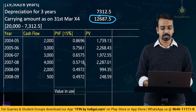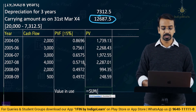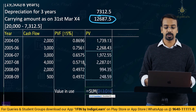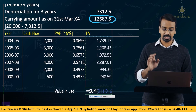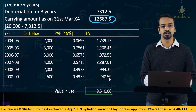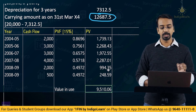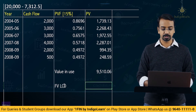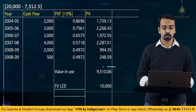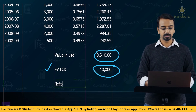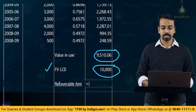The value in use — the sum of all present values — comes to 9,510.06, which can be rounded to 9,510. The fair value less cost of disposal is given as 10,000. The recoverable amount is the higher of these two, which is 10,000 (fair value less cost of disposal).